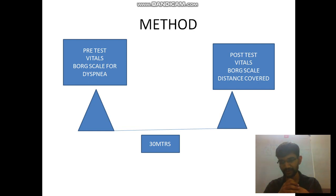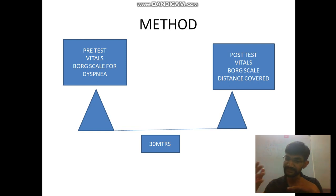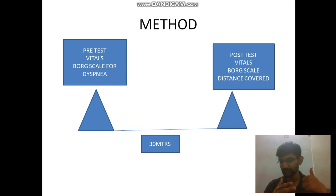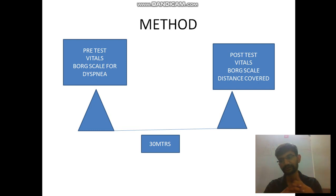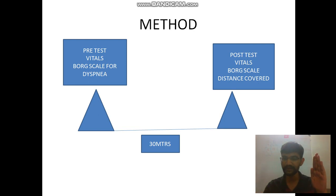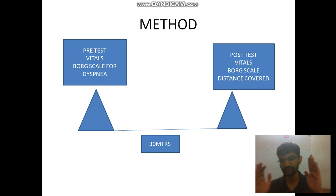We also re-check the Borg Scale of Dyspnea post-test to compare pre- and post-test scores. If the patient feels too breathless, too tired, dizzy, has a headache, or has palpitations, we stop the test and record the total distance covered up to that point. If the patient stops mid-lap, we mark the position with chalk and calculate the total distance covered.